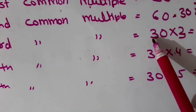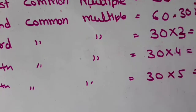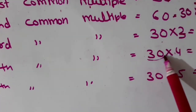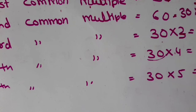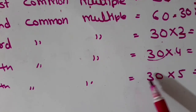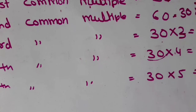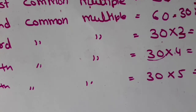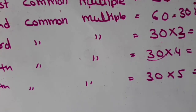For the third common multiple, multiply 30 by 3, which is 90. For the fourth common multiple, multiply 30 by 4, that is 120. For the fifth common multiple, multiply 30 by 5, that is 150. So to find the next common multiple, multiply the LCM by the counting number — for the second multiple multiply LCM by 2, for the third by 3, and likewise. Question number 5 is the same type — you will do it yourself.